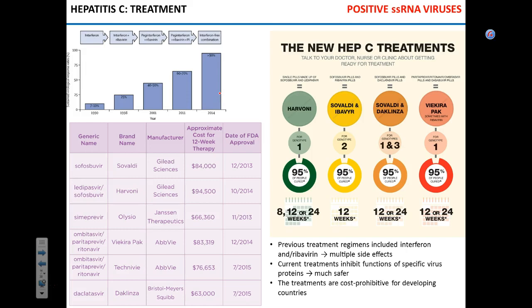The idea was to inhibit two key enzymes necessary for hepatitis C replication. Gilead Biosciences managed to successfully develop inhibitors of these two enzymes, now known as sofosbuvir. When Gilead announced the release of sofosbuvir on the market, it was a major breakthrough — their market shares skyrocketed, a great day for Gilead shareholders.